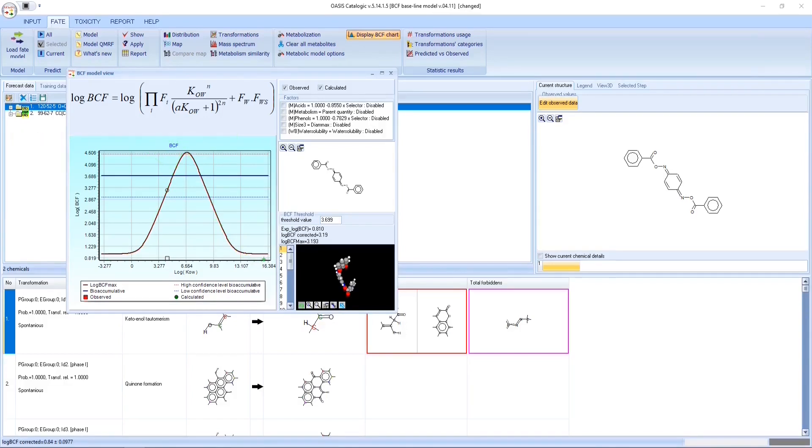However, the BCF max values overestimate the observed BCF values for most chemicals, which are either ionized, or large-sized, or metabolized, or low-water soluble.